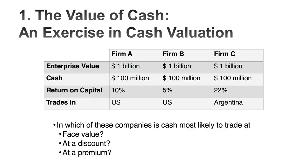All three companies have a hundred million in cash right now. In one of these companies, cash is a neutral asset — a hundred million in cash is worth a hundred million. In another, cash will be discounted by investors. In the third, cash might trade at a premium. I think cash is neutral in Company A — what I call a 'block' company. It does no good, does no bad, it pretty much runs in place.